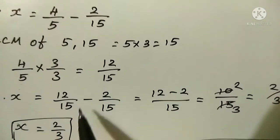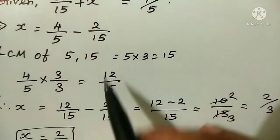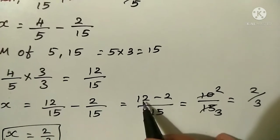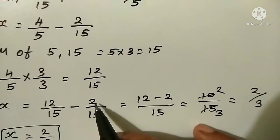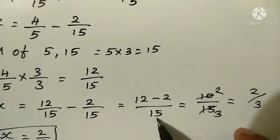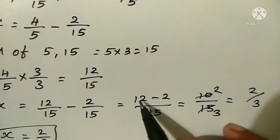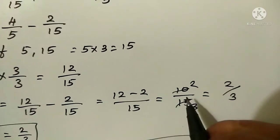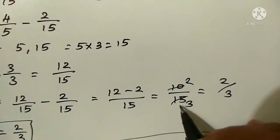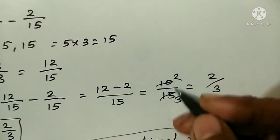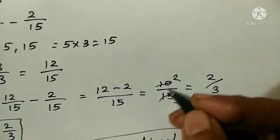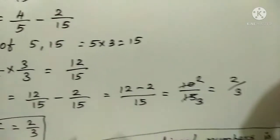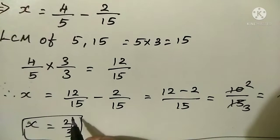So, x is equal to 12 by 15 minus 2 by 15. The denominators are the same — like fractions — so only subtract the numerators: 12 minus 2 is 10. So x equals 10 by 15. Simplifying, 2 fives are 10 and 3 fives are 15, giving 2 by 3. So x is equal to 2 by 3.